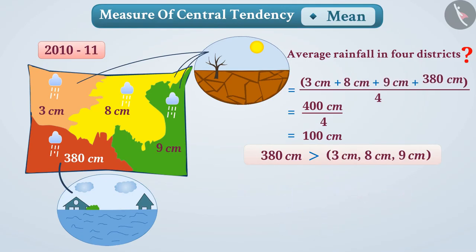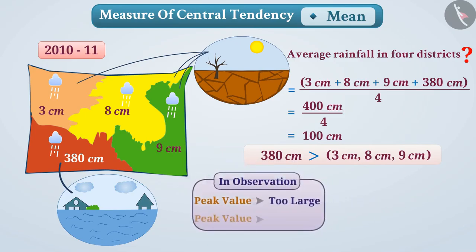By observing observations here and their mean, it can also be said that if the peak value in observations is too large or too small, then the mean does not represent the best of observations.